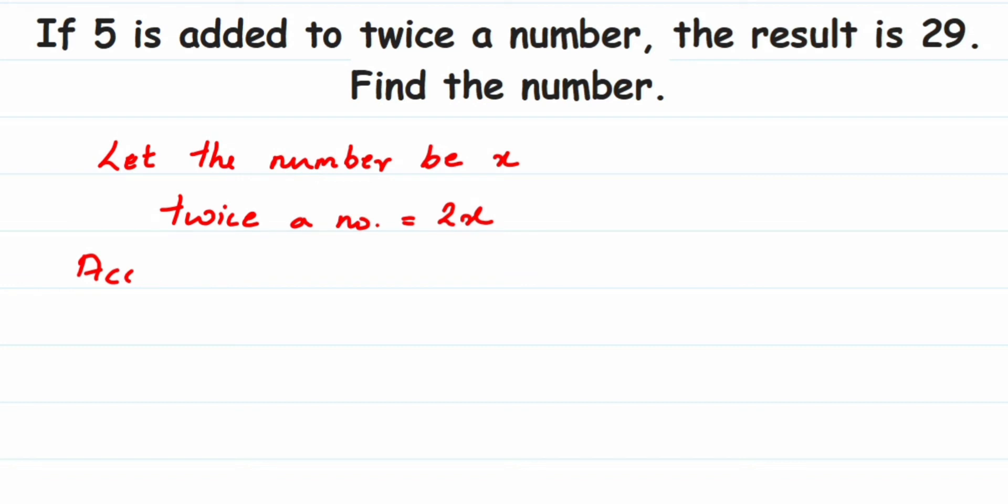Now let us write down what we know from the question. According to the question, they have given that 5 is added to twice a number, so it's just 5 plus 2x. Let me write down the statement here: According to the question, we get 5 is added to twice a number, so 5 plus 2x will be equal to 29, because that is giving the result 29.